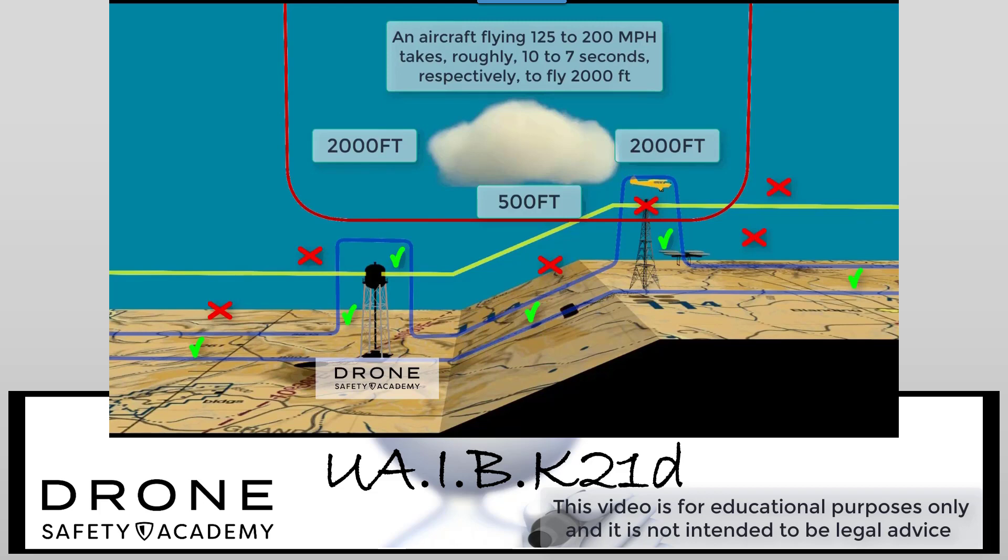A single-engine airplane with a speed of 125 miles per hour will travel 183 feet per second. So for 2,000 feet, that's roughly 10 seconds.